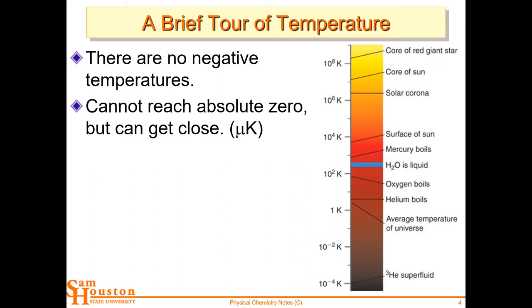This Dewar flask has a vacuum in it — it's a double-walled flask. This liquid in here may be boiling — let's say it's liquid nitrogen at 77 Kelvin. On the outside we have 298 Kelvin. We've pulled a vacuum in here so there's no conductive heat flow from the outside in. Heat flows from hot to cold.